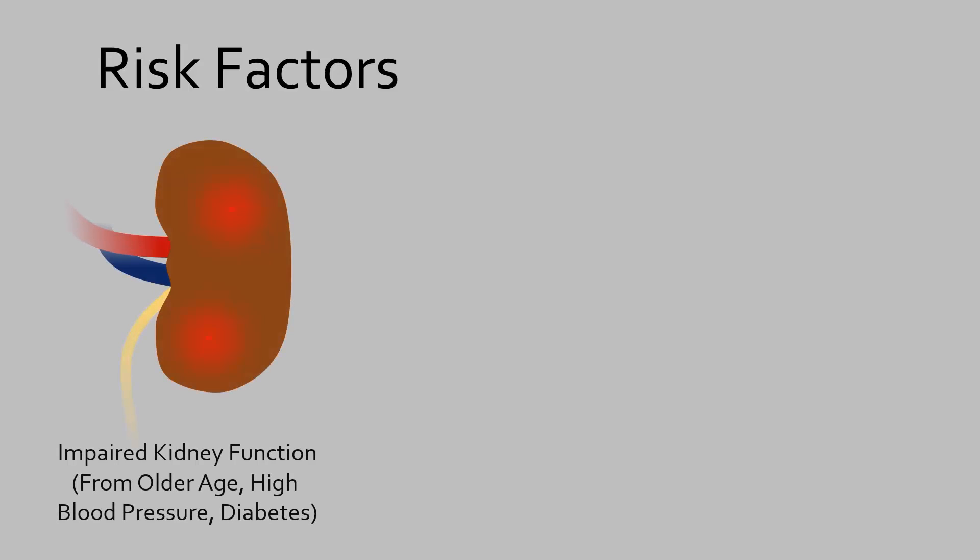Risk factors are essentially anything that causes hyperuricemia. Impaired kidney function due to increased age, high blood pressure, and diabetes increase the risk of gout. Drugs that cause more water to be excreted can decrease the amount of water in blood and therefore increase uric acid concentration.